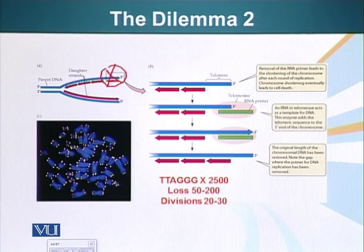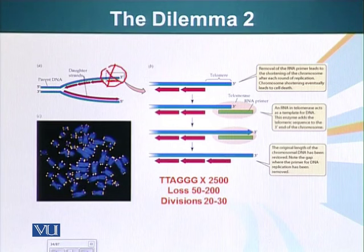So what strategy do cells adapt? One of the things some cells do — not all of them — they make a special enzyme called telomerase. Telomerase can fix this problem because the very tips of the chromosomes have a special sequence which is repeated multiple times in tandem fashion.